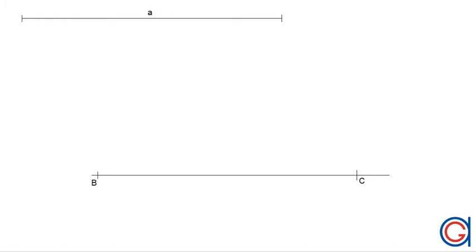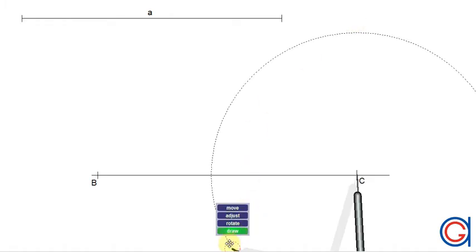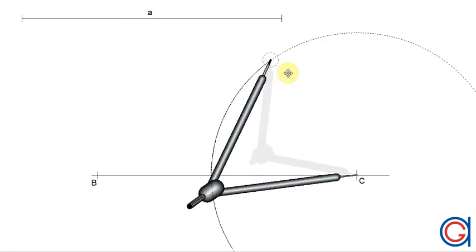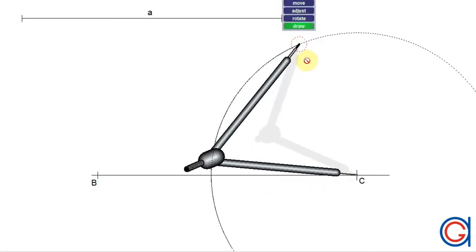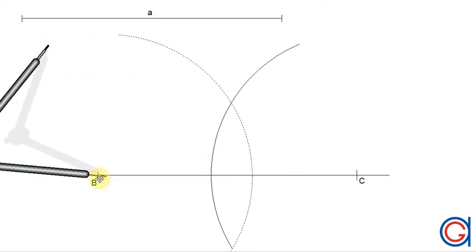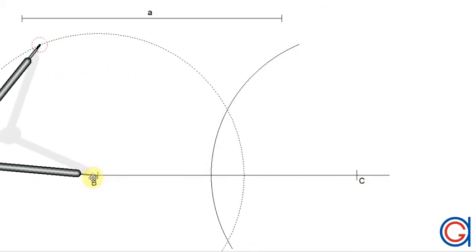The next step is to work out the perpendicular bisector of the line segment BC. To do this, we set the compass slightly longer than half the line segment BC. Setting our compass on vertex C, we scribe an arc to the left, and with the same radius, we set the compass on vertex B and scribe an arc to the right which intersects the previously drawn arc at two points.